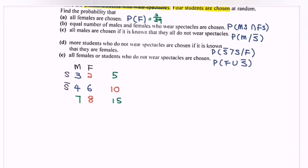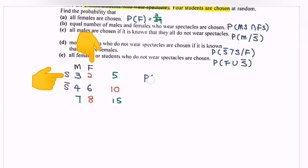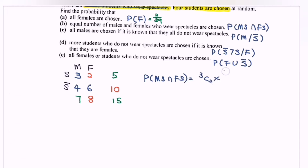For part B, equal numbers of male and female who wear specs are chosen. We need to choose 2 from the 3 male spec-wearers and 2 from the 2 female spec-wearers. So the probability equals 3C2 multiplied by 2C2, over 15C4 with no restriction, giving the answer 1 over 455.